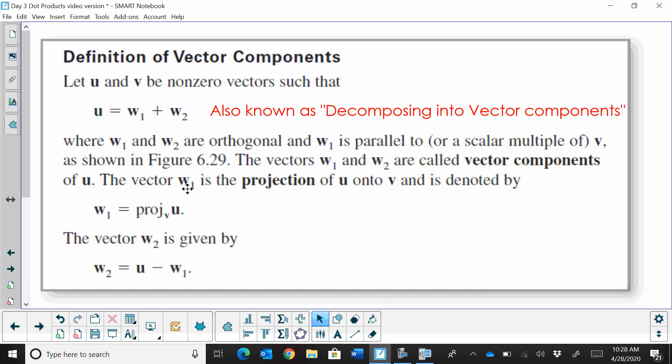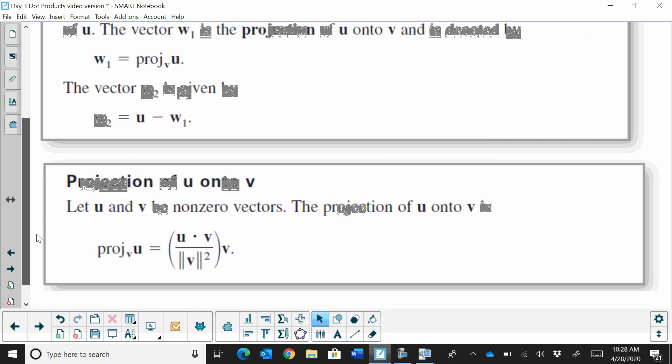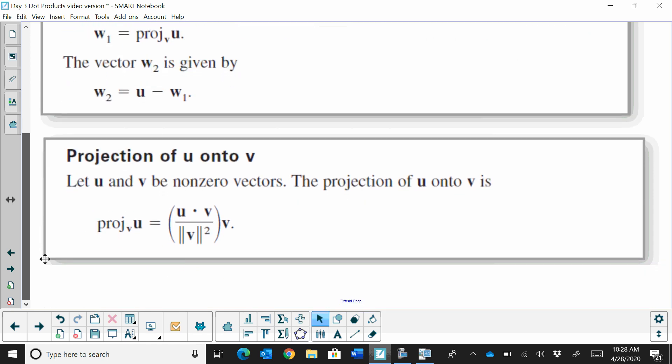The first vector is a projection of u onto v, denoted by the projection of u on v. The second vector is found by just taking u and subtracting the vector that you find. It sounds very complicated, but it's actually not as bad as you think.